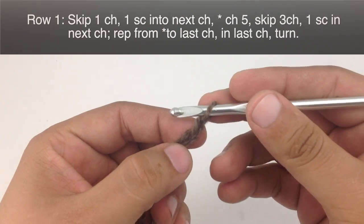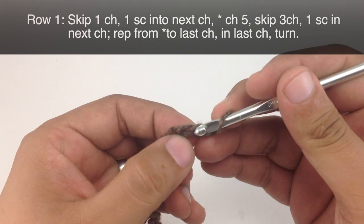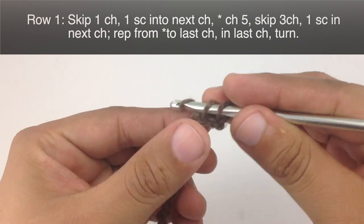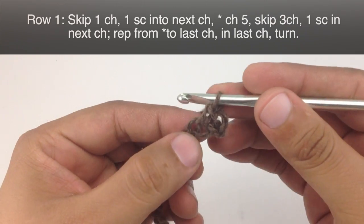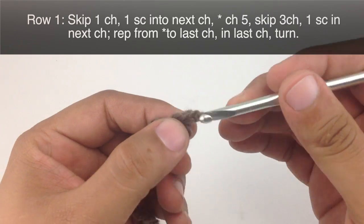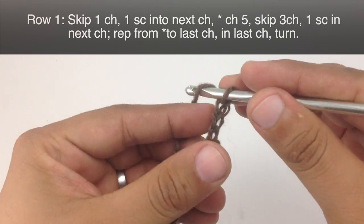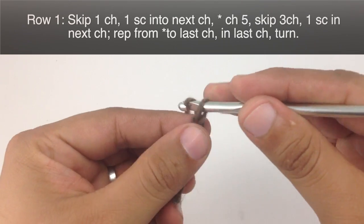Row 1. We are going to begin by skipping the first stitch and doing a single crochet into the second stitch from our hook. We are going to start our repeat by chaining 5: 1, 2, 3, 4, and 5.